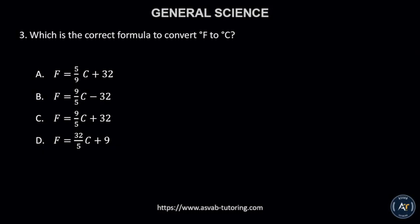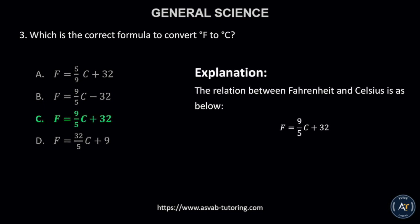Number 3. Which is the correct formula to convert Fahrenheit to Celsius? A. F = 5/9 × C + 32. B. F = 9/5 × C − 32. C. F = 9/5 × C + 32. D. F = 32/5 × C + 9. The correct answer is letter C. The relation between Fahrenheit and Celsius is F = 9/5 × C + 32.